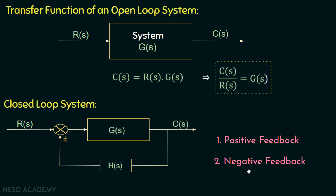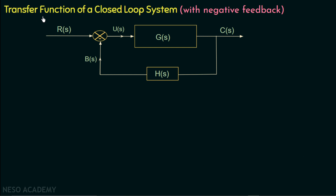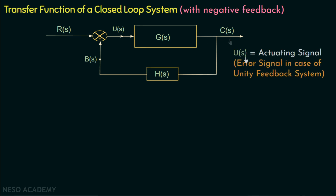Now let us derive the transfer function for a closed loop system in case of negative feedback. We have a closed loop system in which the reference input is RS. The gain of the system is GS and since it is in the forward path, we call this the forward path gain. HS is the feedback path gain because it occurs in the feedback path, and CS is the controlled output. US is the actuating signal. In case of a unity feedback system, we call this signal the error signal, and the value of feedback path gain is equal to 1. BS is the feedback signal, which is the output signal of the feedback path gain HS, with CS as the input.